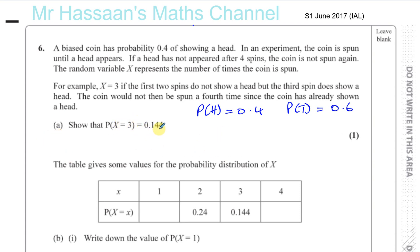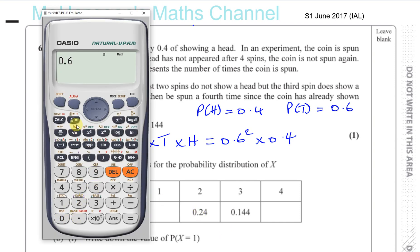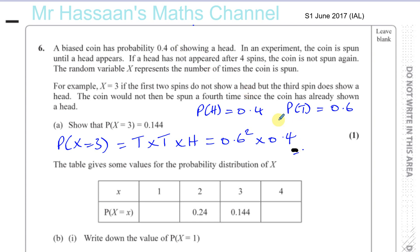Show that the probability of X equals three is 0.144. So the probability that X equals three means you get a tail, then a tail, then a head, and then you stop. That's the only way of getting X equals three — three throws. That's going to be 0.6 times 0.6, which is 0.6 squared, times 0.4. And that gives us 0.144.